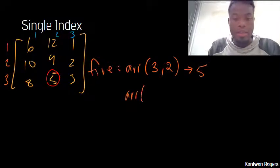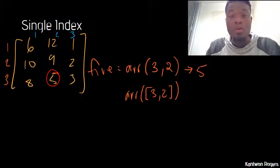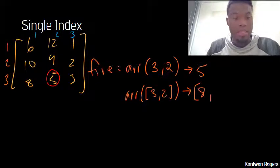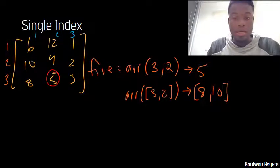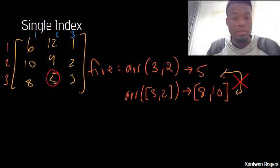Now what if I had done something like giving a list of linear indices in square brackets? That would give me back an 8 and a 10. These are not the same things — they are not equal to each other.